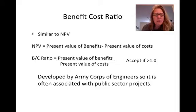Benefit-cost ratio is similar to the net present value, in that the net present value is the present value of the benefits minus the present value of the cost. The benefit-cost ratio is the present value of benefits divided by the present value of the cost. We're then just looking for, instead of a positive NPV, we're looking for a ratio that's greater than 1.